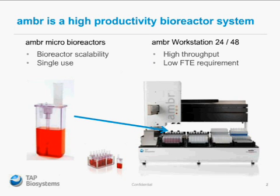So what is AMBA? AMBA is a high productivity bioreactor system. There are two key elements to the system: the disposable microbioreactors, which have a 10 to 15 mil working volume and have a real nice scalability characteristic for bioreactor performance. They're also single-use, so it's very quick to set up experiments and clean down at the end, giving a much faster turnaround. The automated workstation can take 24 or 48 of the single-use reactors, so it's a pretty high-throughput system with a low FTE requirement.